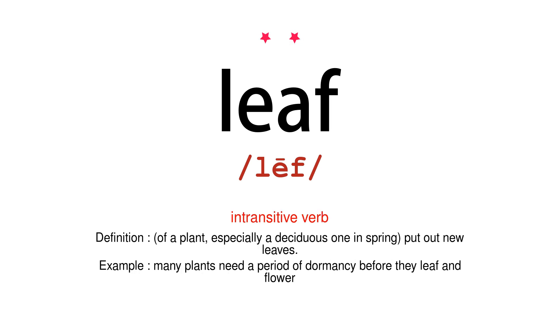Intransitive verb. Definition: of a plant, especially a deciduous one in spring, put out new leaves. Example: many plants need a period of dormancy before they leaf and flower.